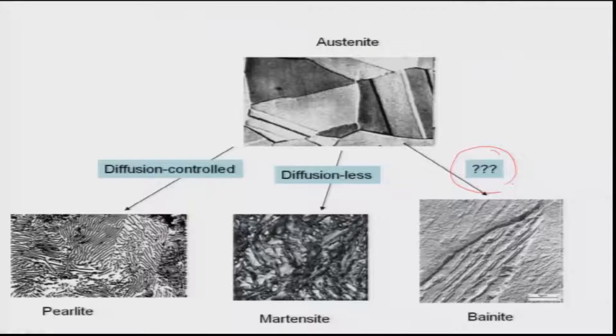The product of bainite transformation is again ferrite and cementite, but the morphologies are different. In pearlite, we also have ferrite and cementite, but pearlite forms as a lamellar morphology in which growth is dominated by carbon diffusion from the product phase to the parent phase across the interface, leading to lamellar morphology.